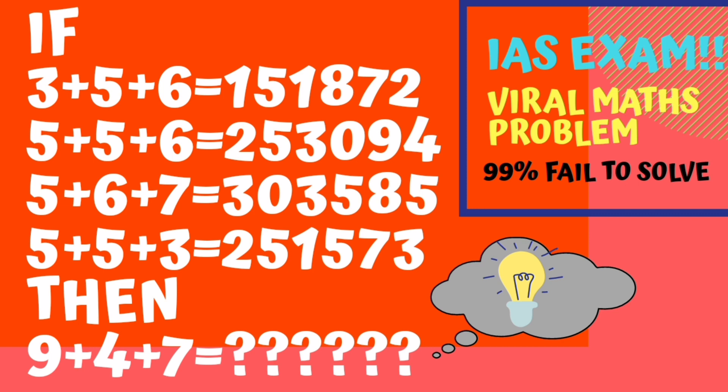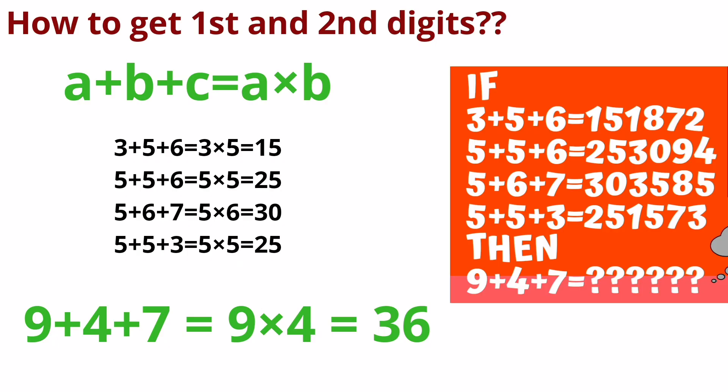First we will see how to get the first two and second digits. It's very simple. Now we will see a+b+c formula apply a into b, then 15, 25, 30, 25 satisfied.